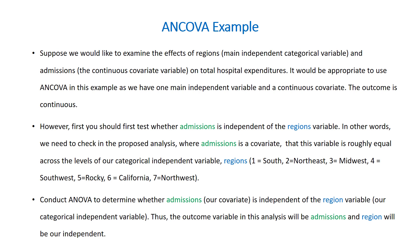However, first you should check whether admissions is independent of the regions variable. In other words, we need to check in the proposed analysis where admissions is a covariate, that this variable is roughly equal across the levels of our categorical independent variable, that is, regions consisting of seven groups.